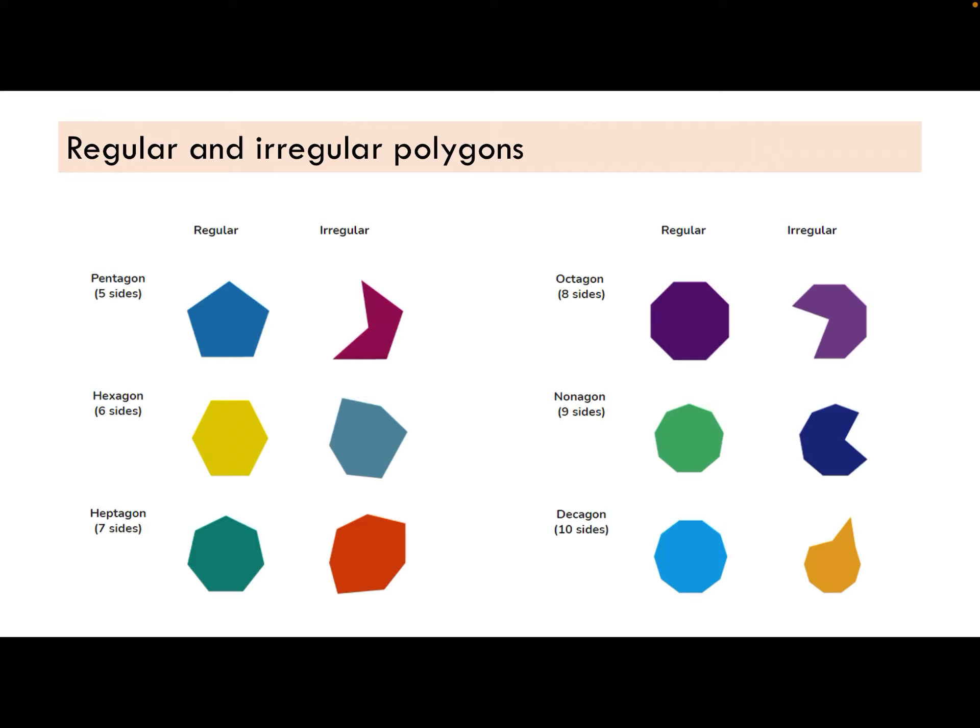So have a look. There are some common regular and irregular polygons. So pentagon, hexagon, heptagon, decagon, nonagon, octagon. They're regular and irregular form.